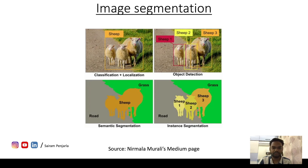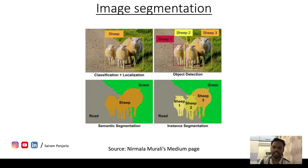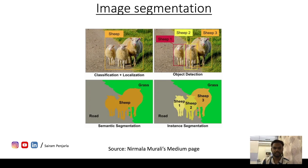Image segmentation can be classified into four different types. The most basic is localization — the word has 'local' in it, meaning we identify the area in the image where we have an object. I'm going to identify where the object is and draw a bounding box. That's localization — I'm not identifying what the object is, just where it is.